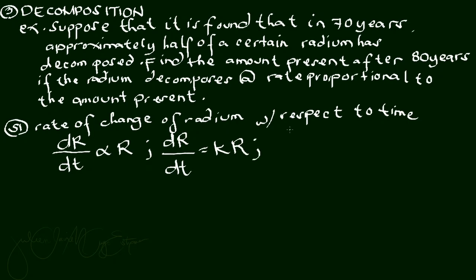Separating the variables, that will become dR over R. Cross-multiplying, that is k times dt. We are now ready to integrate.